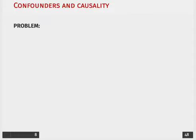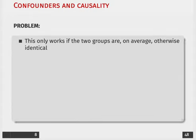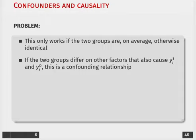One issue that frequently comes up when we're talking about causality is the occurrence and potentially the misspecification of confounders. When we're talking about confounders, the general problem is that you can imagine there are two groups that are otherwise identical. If those two groups differ on any other factors that might cause their outcome, whether or not they actually comply with the treatment.